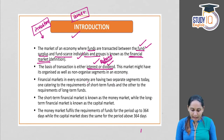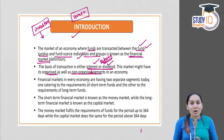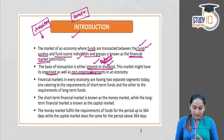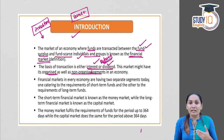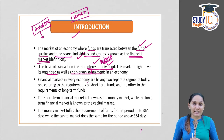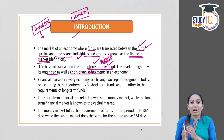This market might have organized as well as non-organized segments in an economy. Financial market can be either organized or unorganized — meaning it can operate within the purview of regulators or outside the purview of regulators. The regulator of the financial market is SEBI — the Securities and Exchange Board of India.